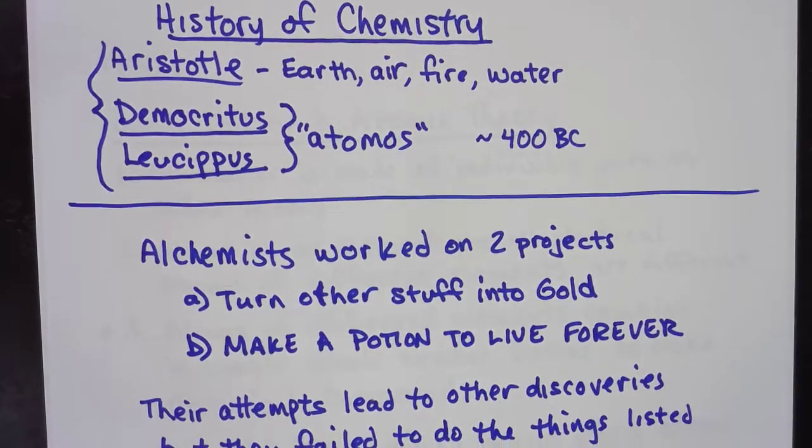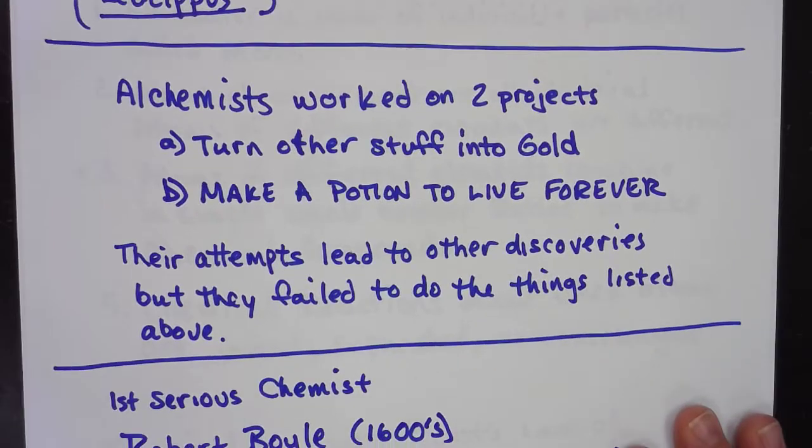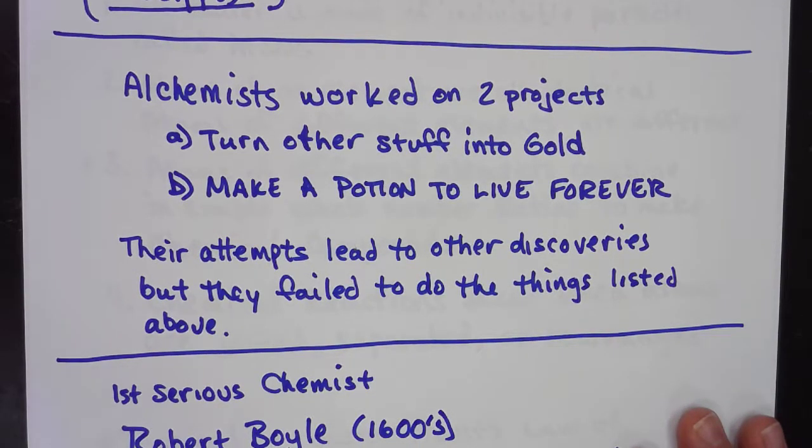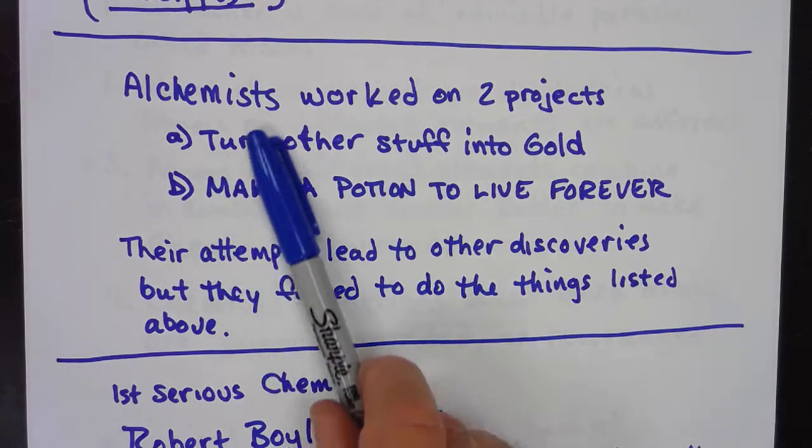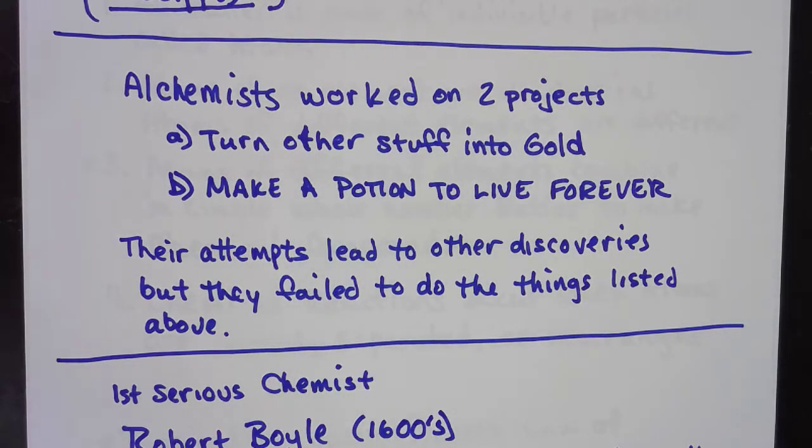For the next several years, several thousand years, the work of chemistry was basically done by people called alchemists. And alchemists really only had two things that they wanted to do. They wanted to turn other stuff into gold, and they wanted to make a potion that helps people to live forever. So, who wants to have things turned into gold? Poor people would like to have their stuff turned into gold. And who wants to live forever? People that are already rich. So, if you've got those two things going for you, you're going to be set for life. If you can come up with those two ideas, either one of them, and you'll be in great shape for the rest of your life.